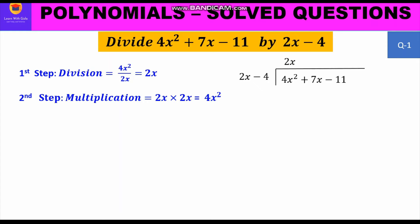Now we move to the second step, multiplication. We multiply 2x with the divisor, that is 2x − 4. So 2x × 2x = 4x², and 2x × (−4) = −8x. We write this product just below the first two terms of the dividend.